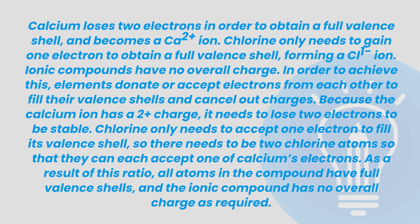Sentences like this are where you tend to get those excellence grades — you need to lay the groundwork first, but after that it takes a sentence or two for an amazing upgrade. Altogether this looks like: 'Calcium loses two electrons in order to obtain a full valence shell and becomes a Ca²⁺ ion. Chlorine only needs to gain one electron to obtain a full valence shell, forming a Cl⁻ ion. Ionic compounds have no overall charge. In order to achieve this, elements donate or accept electrons from each other to fill their valence shells and cancel out charges. Because the calcium ion has a 2+ charge it needs to lose two electrons to be stable, and chlorine only needs to accept one electron, so there needs to be two chlorine atoms. As a result of this ratio, all atoms in the compound have full valence shells and the ionic compound has no overall charge as required.'